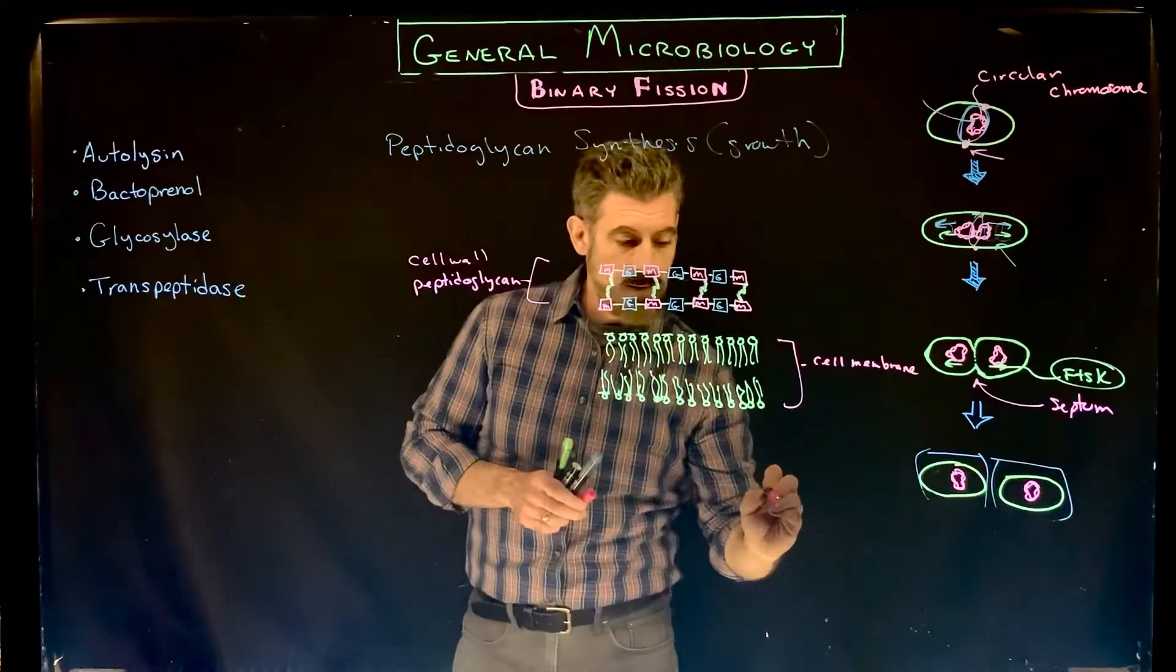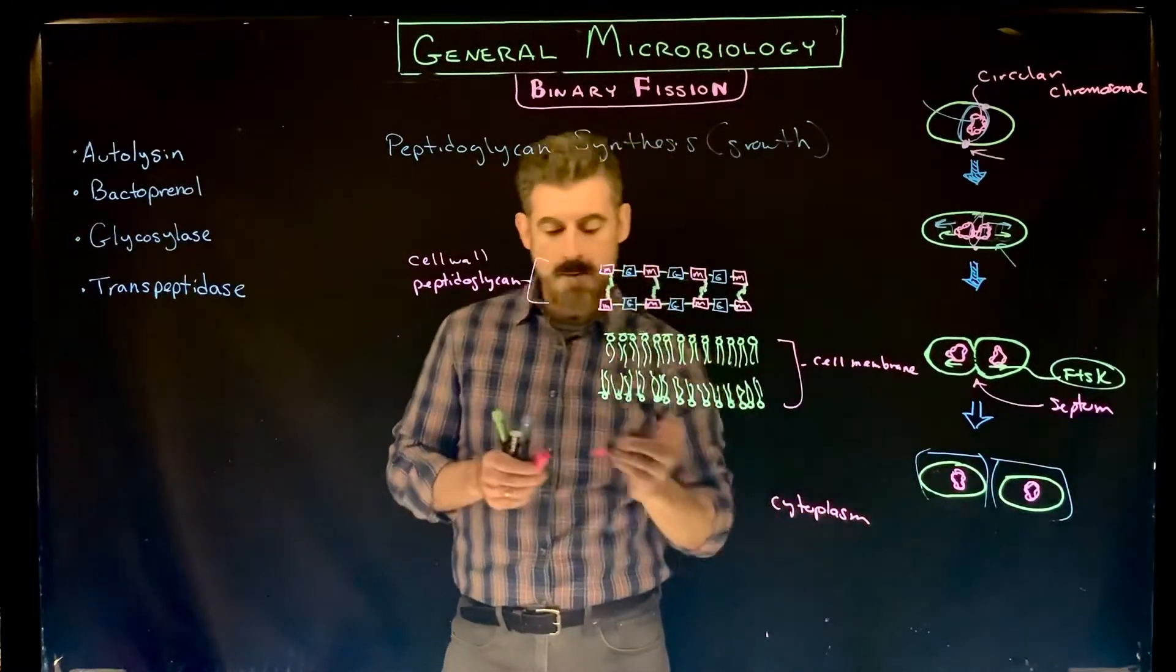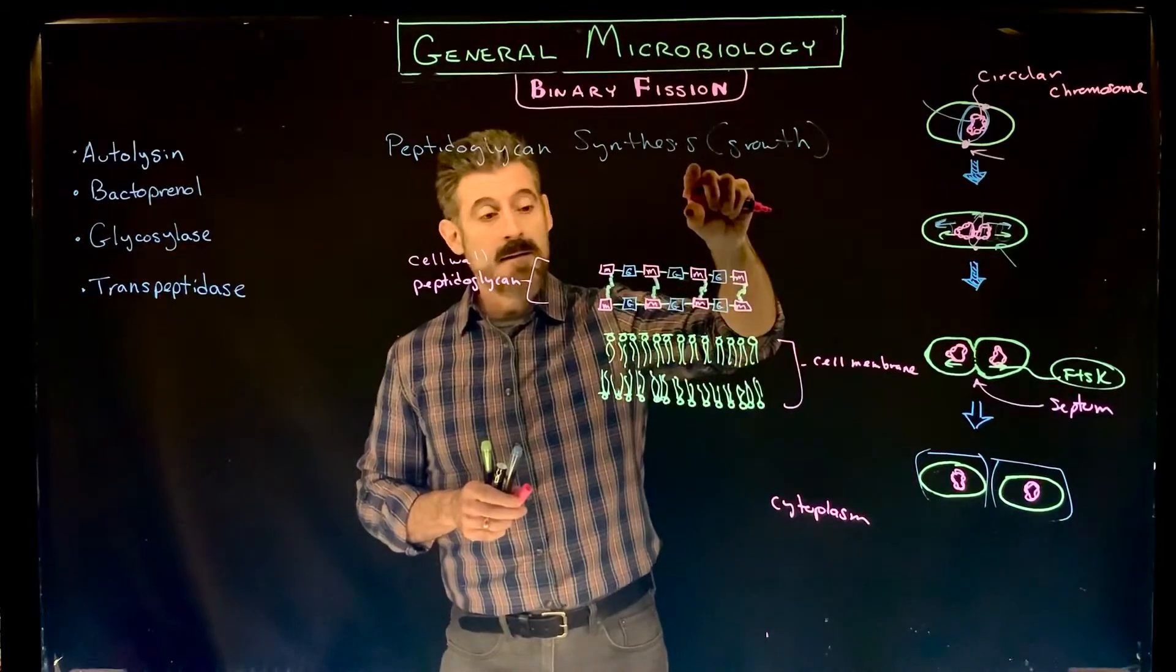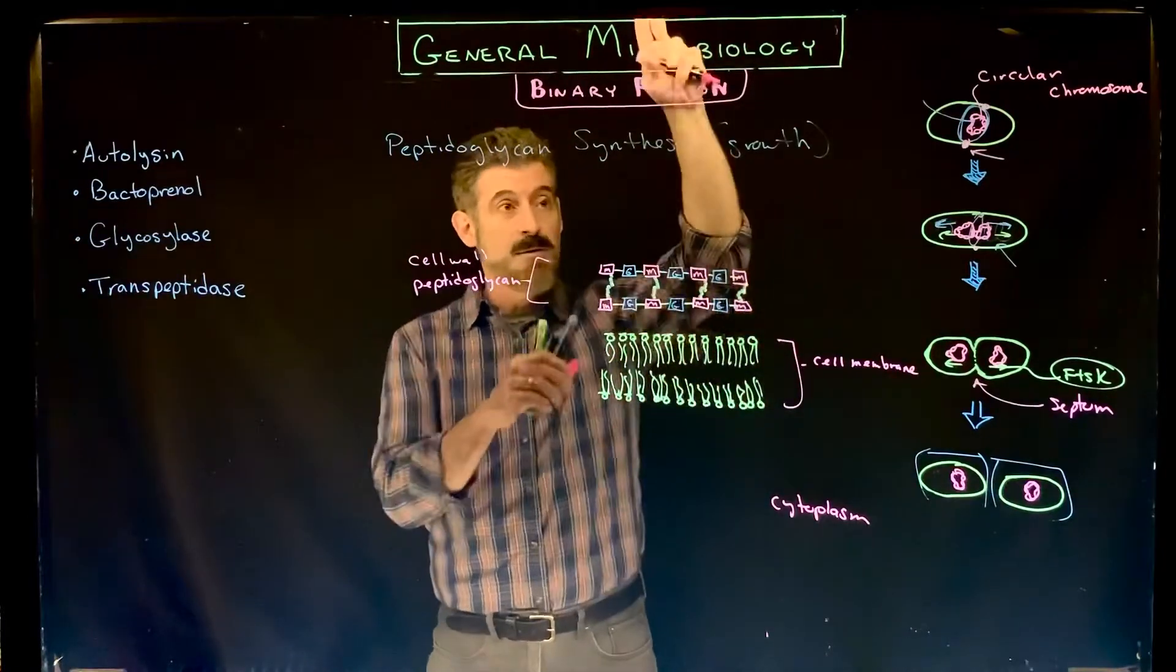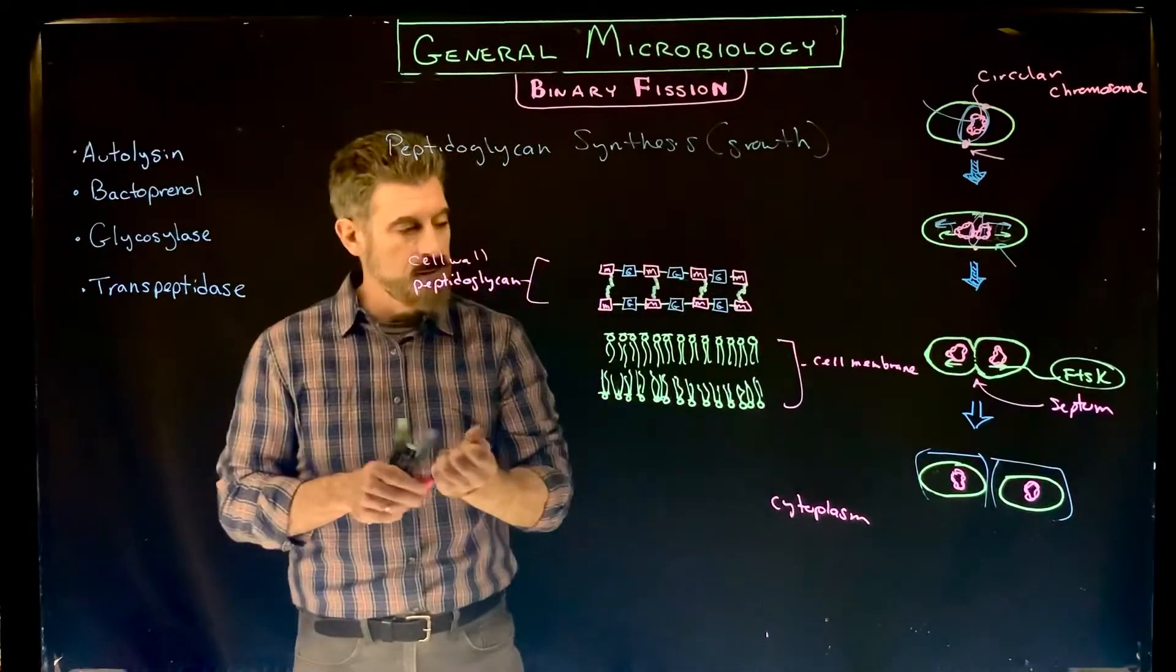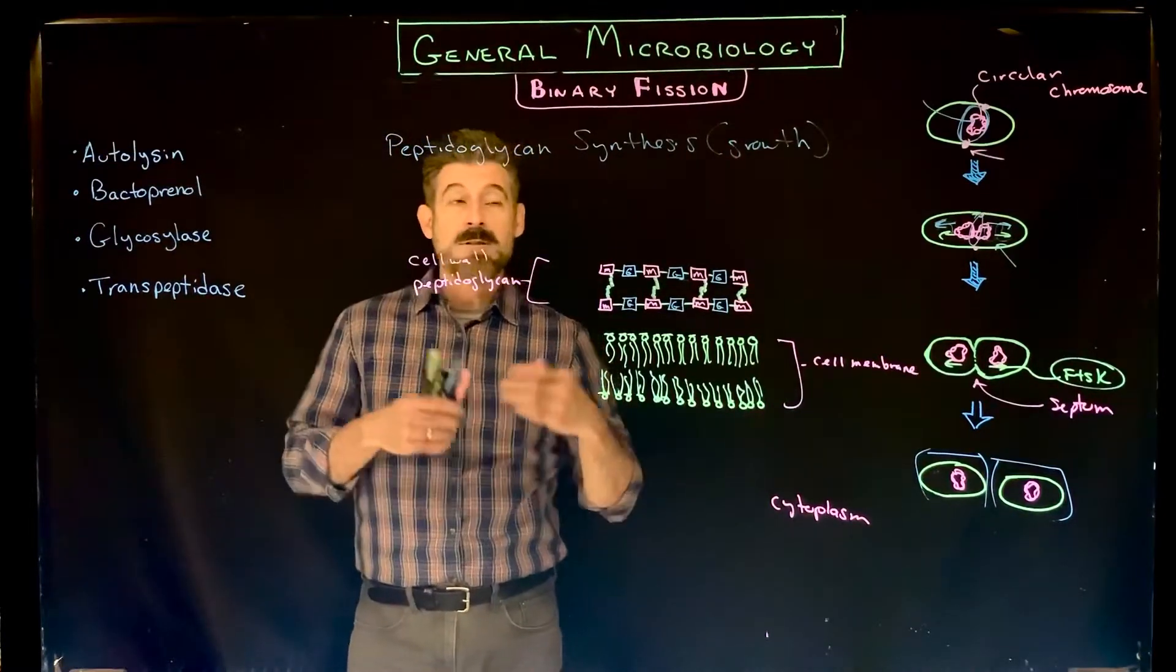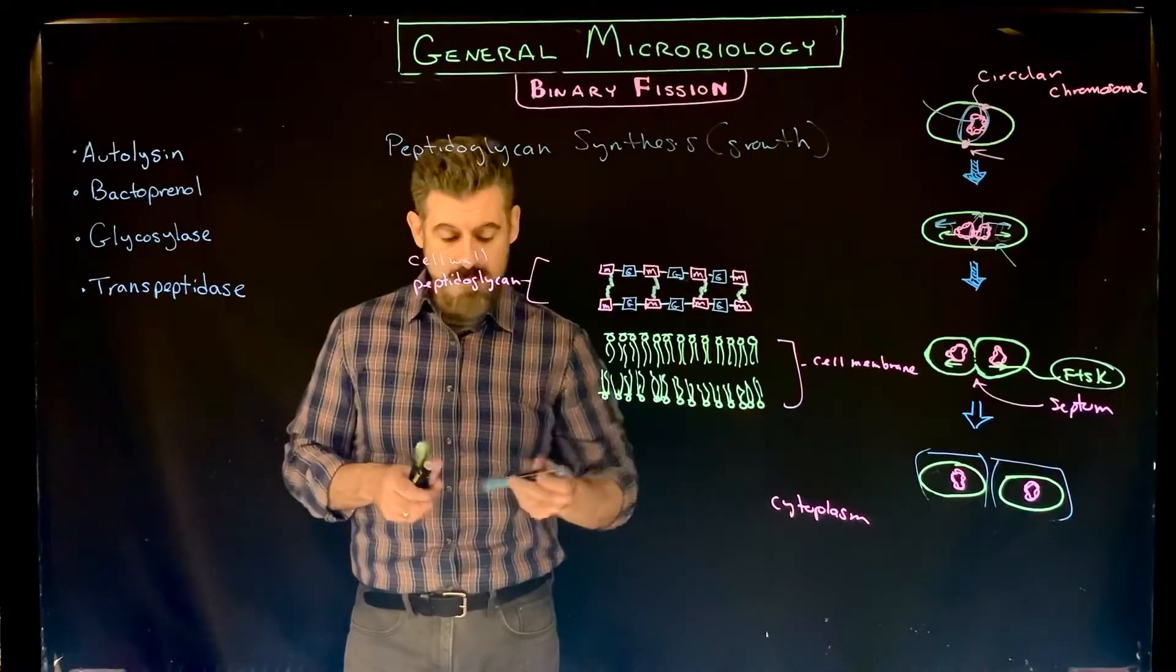Then we have our phospholipid bilayer, our cell membrane, and inside the cell here we have our cytoplasm. If it was a gram-negative cell there'd be a second phospholipid bilayer here and this whole thing would be called the periplasm. If it's gram-positive with super thick peptidoglycan, just this little layer here is the periplasm.